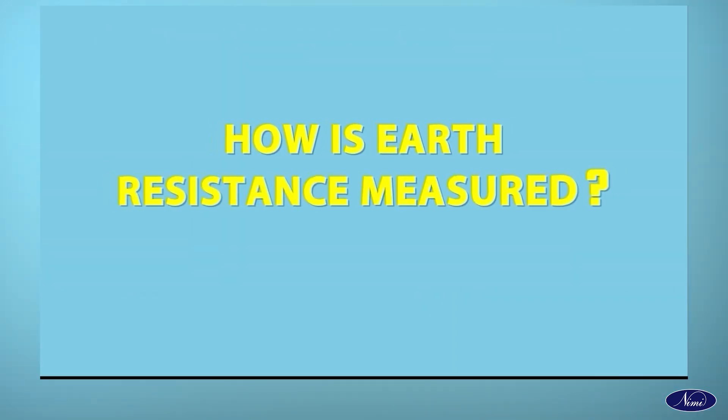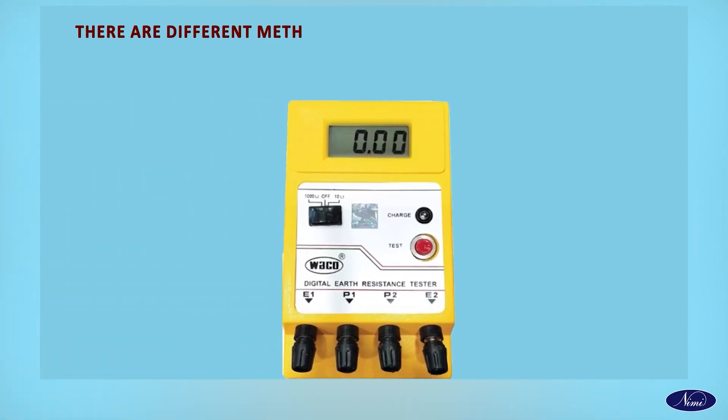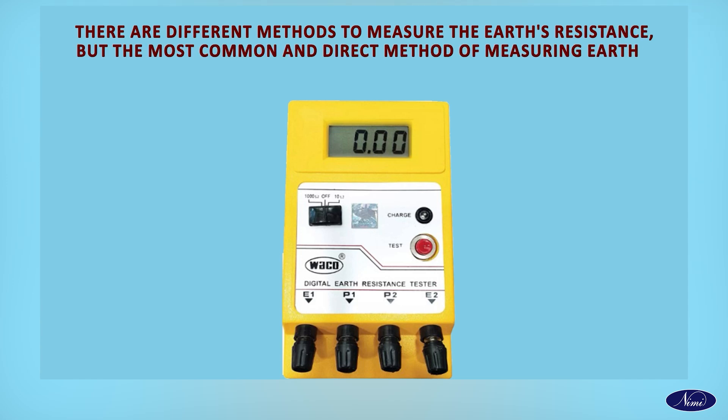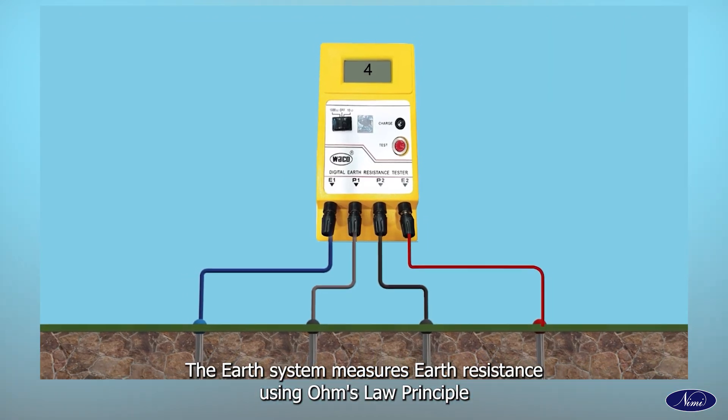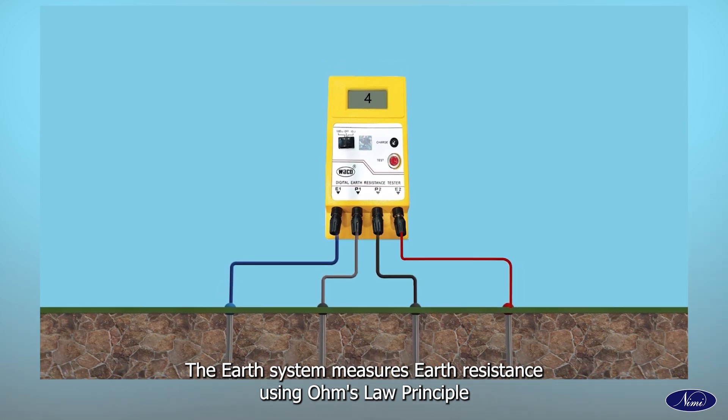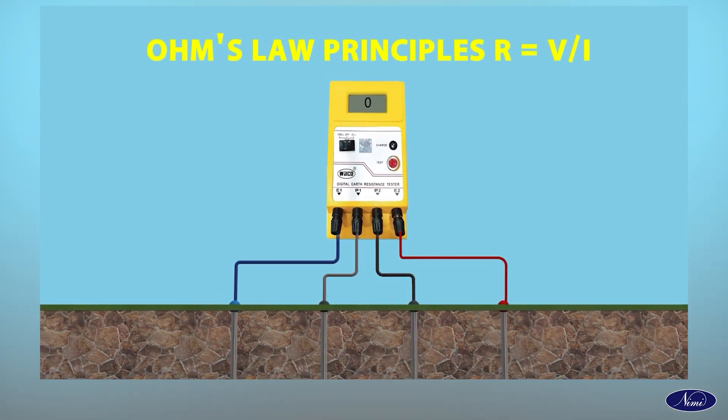How is Earth Resistance measured? There are different methods to measure the Earth's resistance, but the most common and direct method is by using equipment called Earth Tester. The Earth Tester measures Earth's resistance using Ohm's law principle: R equals V upon I.